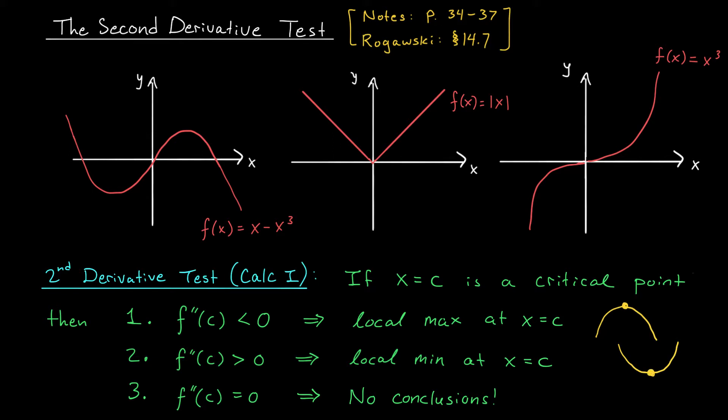Now, notice that I said that the second derivative test can often be used to classify our critical points, but not always. Sometimes the second derivative test will fail us. If for example, the second derivative at c is zero, we can't draw any conclusions.